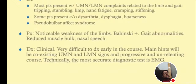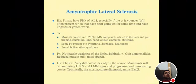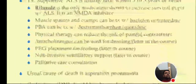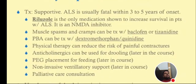The most accurate diagnostic test is EMG — remember, EMG is the investigation of choice. Differential diagnosis includes myasthenia gravis and spinal stenosis. Treatment is supportive. ALS is usually fatal within three to five years of onset — patient survival rate is three to five years only.